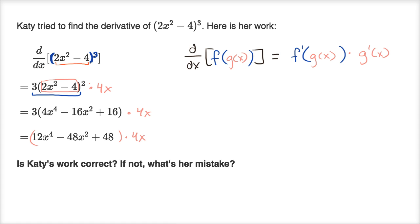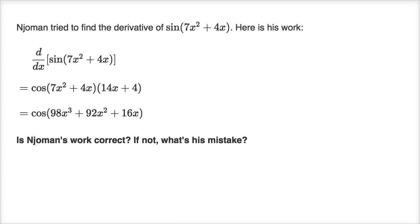So let's do another one. Here it says Njoman tried to find the derivative of sine of seven x squared plus four x. Here is his work. Is Njoman's work correct? If not, what is his mistake? Pause the video and see if you can figure it out. So it's the derivative of sine of this expression, so you'd want to use the chain rule. Using the chain rule, you want to find the derivative of the outside function with respect to the inside. The derivative of sine of something with respect to that something is going to be cosine of that something — so that's right. And then you want to multiply that times the derivative of the inside with respect to x. The derivative of seven x squared is 14x, derivative of four x is four. So that step looks good.